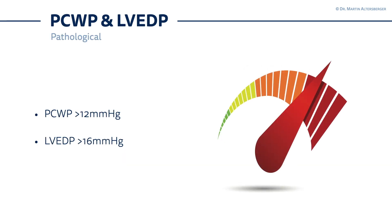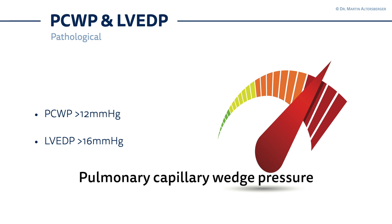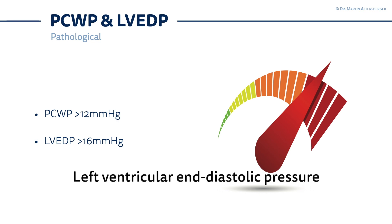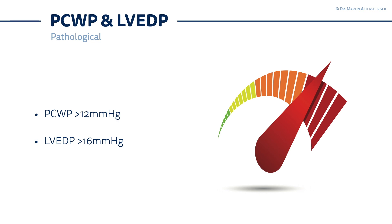What is pathological? What is normal? There are two measurements or two pressures we have to remember. First, the PCWP — the pulmonary capillary wedge pressure — above 12 mmHg it's pathological. And the left ventricular end-diastolic pressure, which is normal below the value of 16 mmHg. Keep those two numbers in mind, because those are the numbers we have to remember when we talk about elevated filling pressures.